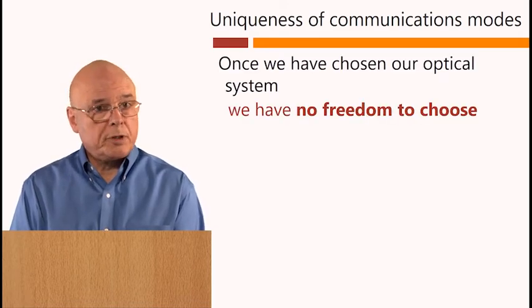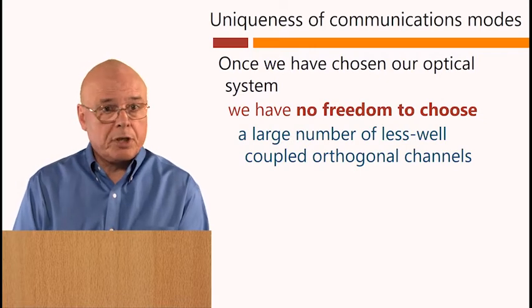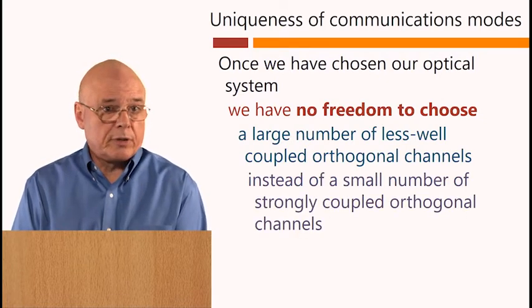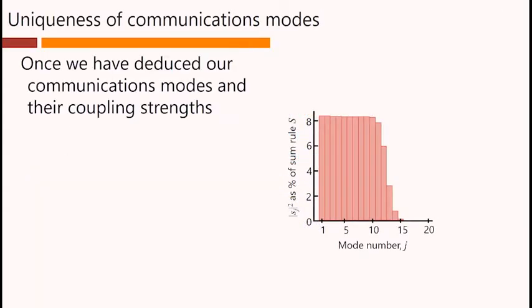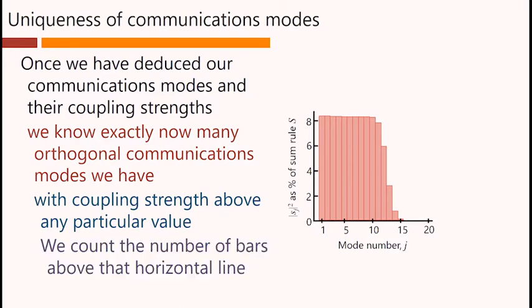Once we have chosen our optical system, we have no freedom to choose a large number of less well-coupled orthogonal channels instead of a small number of strongly coupled orthogonal channels. Once we have deduced our communications modes and their coupling strengths, we know exactly how many orthogonal communications modes we have with coupling strength above any particular value.